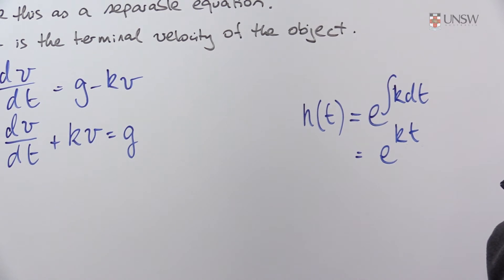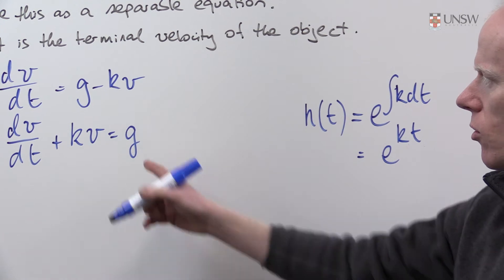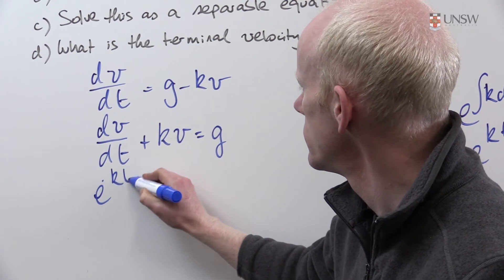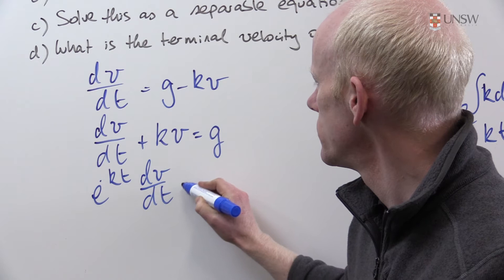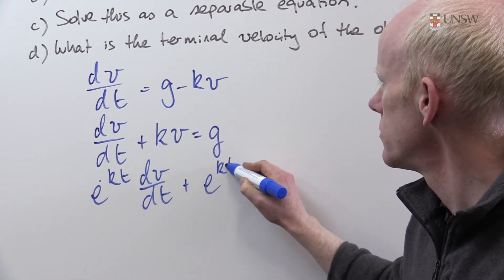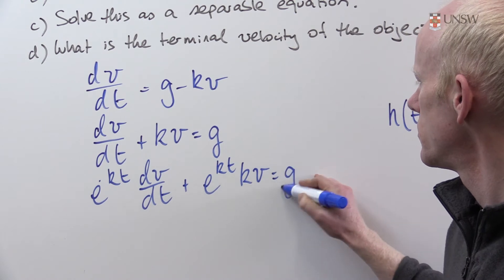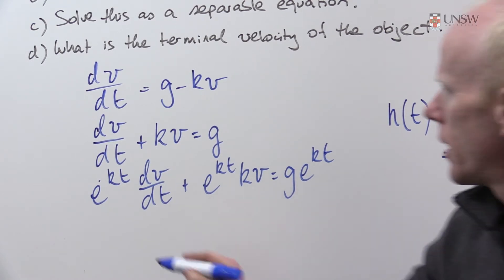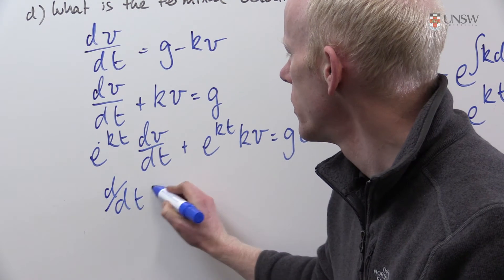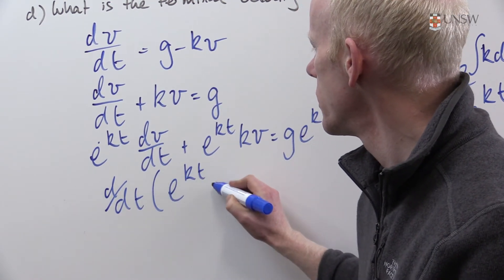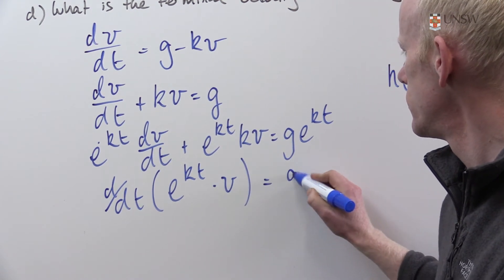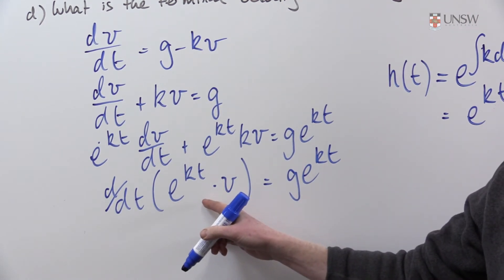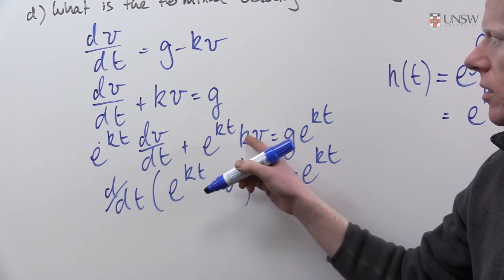Once I have my integrating factor, I'm going to multiply my differential equation throughout by that term. Note that the left-hand side can be rewritten as the derivative with respect to time of e to the kt times v. I always like to check, just mentally even, that this expression here represents the line above.